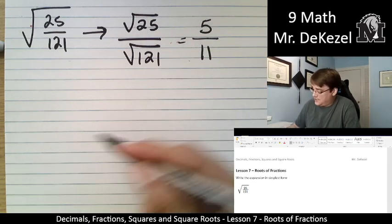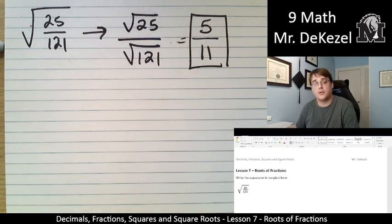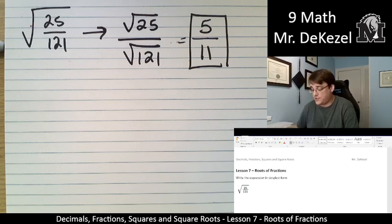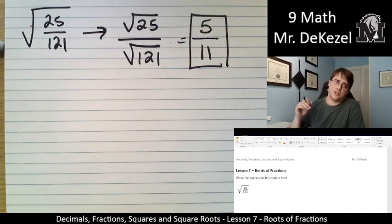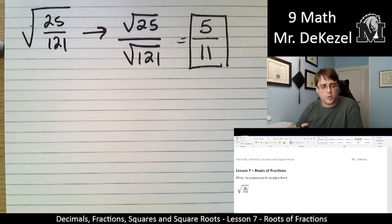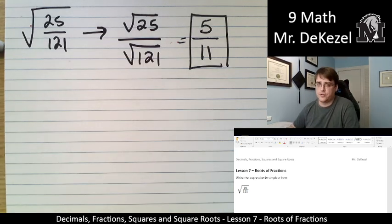So, this is a fraction just written like that. We're going to check to see if we can reduce it. Nothing goes into both 5 and 11, so we're just going to leave it. Always check to see if you can reduce. But that is all you need to do for questions like this. You make sure that you can square the top and square the bottom, so you split it, and then you do those operations.